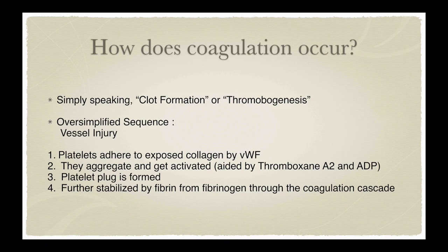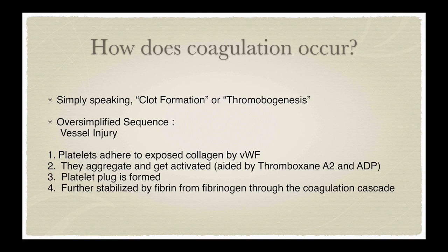Coagulation, simply speaking, is clot formation, or more professionally, thrombogenesis. The oversimplified sequence is: once a vessel injury occurs through external or internal trauma, platelets start adhering to the exposed collagen via von Willebrand factor, or VWF. Once they adhere, they start aggregating — a process aided by thromboxane A2 (TXA2) or ADP. Once they aggregate and get activated, the platelet plug is formed, and it's further stabilized by fibrin from fibrinogen through the coagulation cascade.